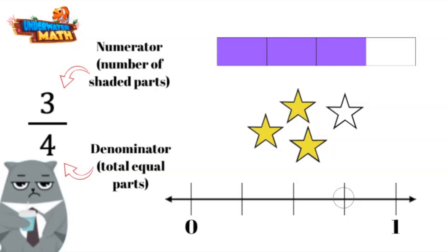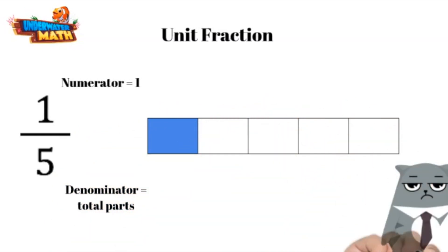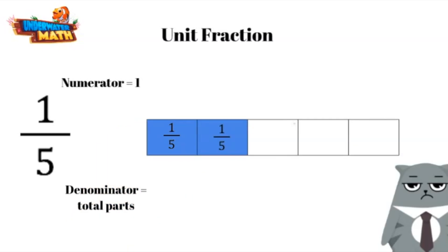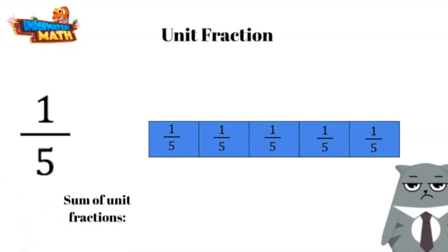In this video we will be looking at specific types of fractions called unit fractions. The numerator in a unit fraction is always one, and the denominator is the total number of equal parts. In this model, the shaded piece is one unit fraction. Each of these unit fractions can be written as one-fifth.